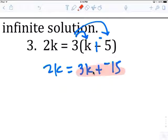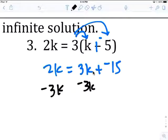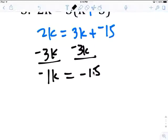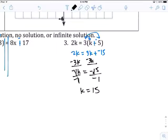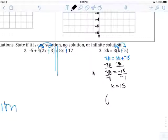Get rid of one of these because there's two numbers. Minus three k, minus three k, because it's like each other. Negative one k equals negative fifteen. K then equals fifteen, one solution. Two negatives is a positive.